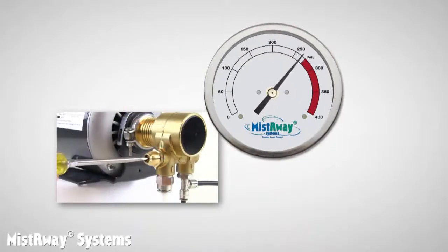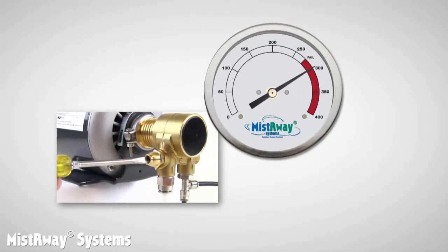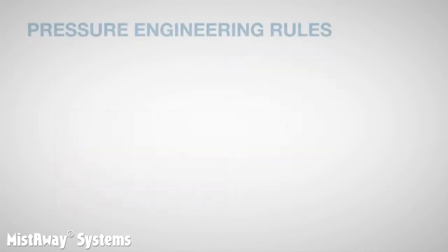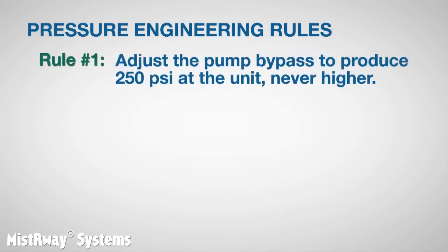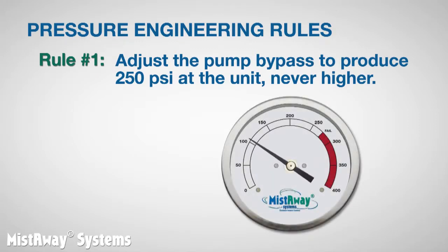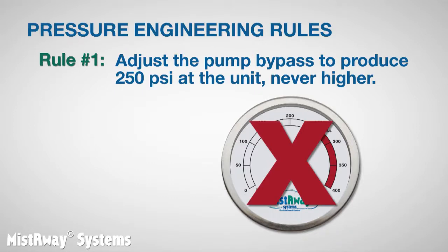It is very important that you understand the limits of the pump when adjusting the bypass. The pumps will fail at sustained use above 275 psi. Which brings us to rule number one. Adjust the pump bypass to produce 250 psi at the unit, never higher. If your pump is set at 250 psi and you are having problems getting adequate pressure and flow out of your nozzle circuit, don't increase the pump pressure to fix the problem. The problem is not the pump.